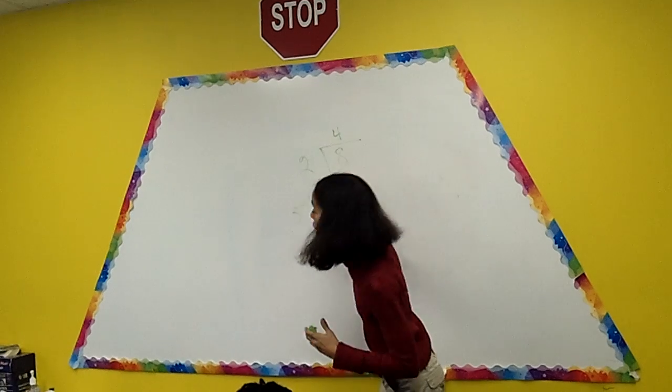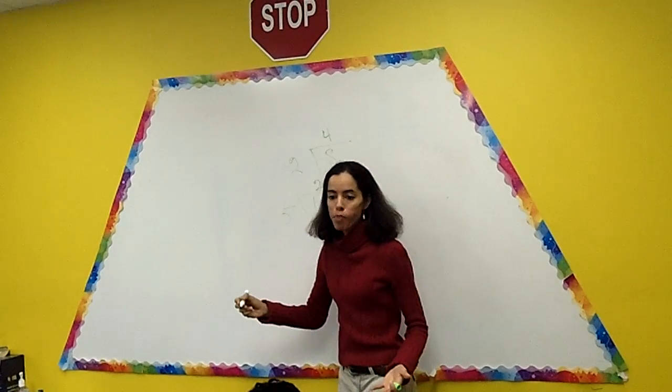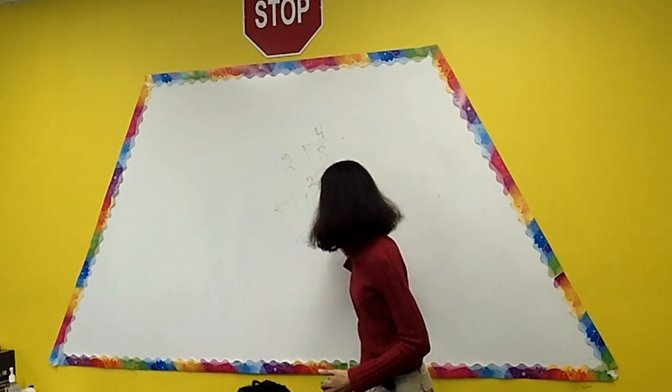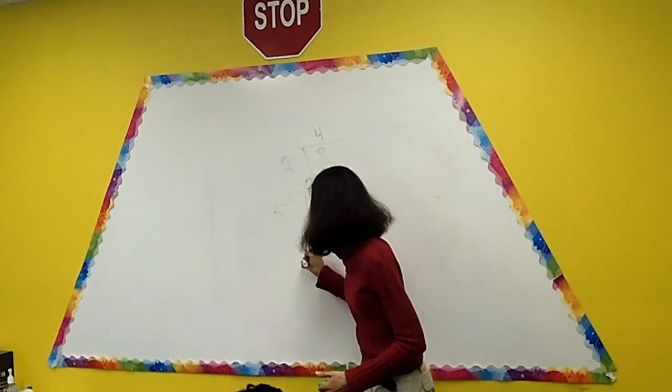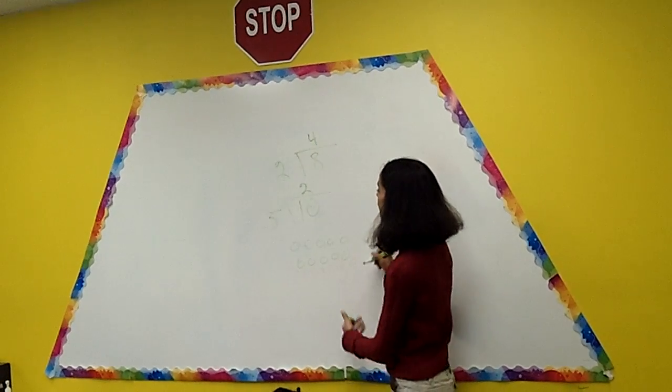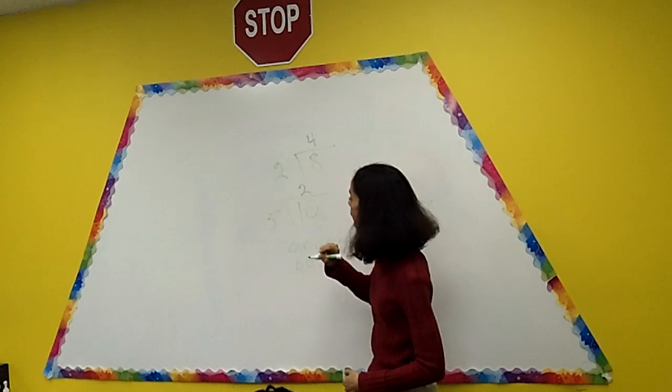I can also do the same thing. I can draw pictures. I can draw ten cookies. One, two, three, four, five, six, seven, eight, nine, ten. Okay.